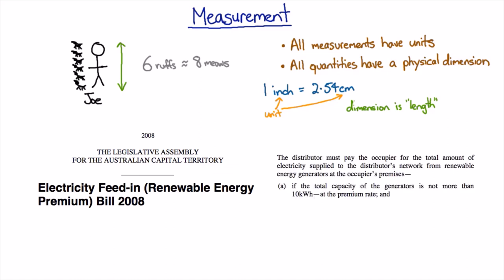and said that households would only get the full price if they had up to 10 kilowatt hours of generating capacity on their roof. The problem? A kilowatt hour is not a unit of power. It's a unit of energy.